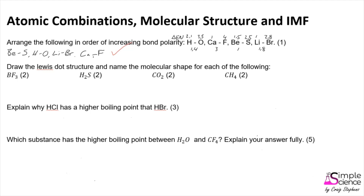The next question asks us to draw the Lewis dot structure and name the molecular shape for each molecule. We start with the central atom — in this case boron, which has three valence electrons. We space those as far apart as possible, and it forms three bonds with nearby fluorines. Fluorine has seven valence electrons, so we draw three additional lone pairs around each fluorine atom.